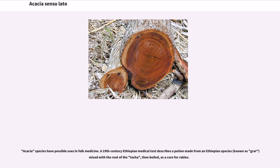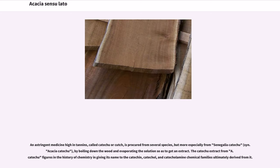Acacia species have possible uses in folk medicine. A 19th century Ethiopian medical text describes a potion made from an Ethiopian species mixed with the root of the tatcha, then boiled, as a cure for rabies. An astringent medicine high in tannins, called catechu or kutch, is procured from several species, but more especially from Senegalia catechu, syn. Acacia catechu, by boiling down the wood and evaporating the solution. The catechu extract figures in the history of chemistry, giving its name to the catechin, catechol, and catecholamine chemical families ultimately derived from it.